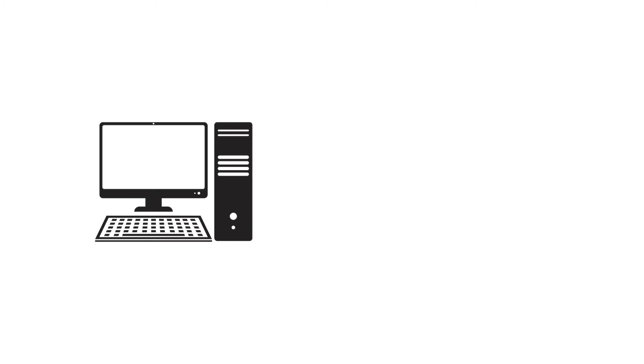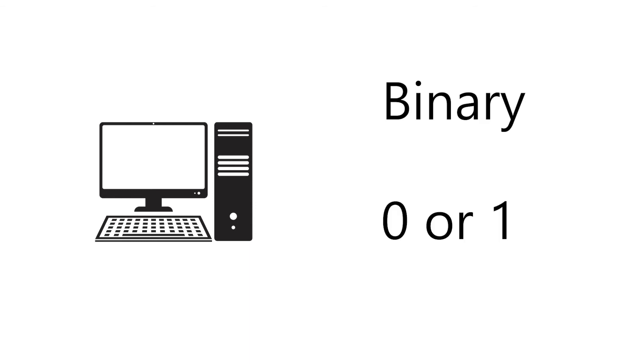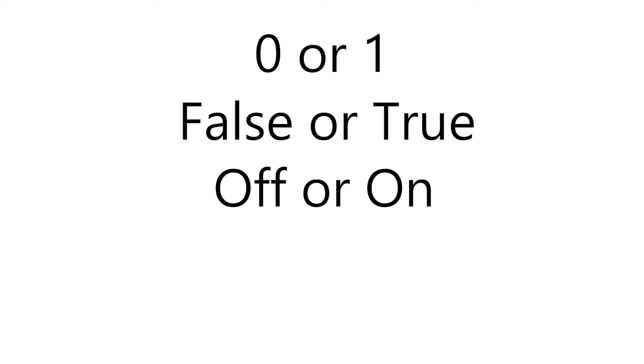So what exactly is the significance of these structural isomers? Computer data and information is transmitted in the form of binary — that means zeros and ones. Anything that can be represented in two different forms, on and off, true or false, zero or one, can represent binary information.